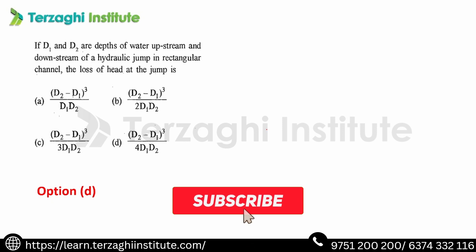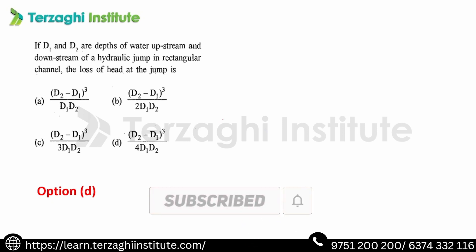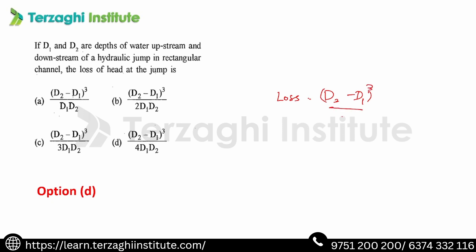If D1 and D2 are depths of water upstream and downstream of a hydraulic jump respectively, the loss of head (energy loss) at the jump is equal to (D2 − D1)³ / (4·D1·D2). D1 is the pre-jump depth (supercritical flow) and D2 is the post-jump depth (subcritical flow). The hydraulic jump is created to reduce the energy of the water.